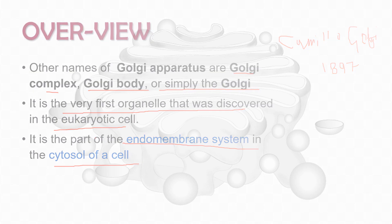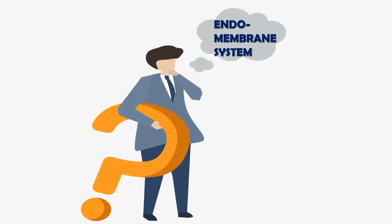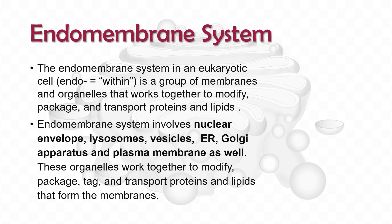You might be wondering what the endomembrane system of a cell is. Basically, it is a membrane system inside a cell where a group of membranes and organelles work together to modify, package, and transport proteins and lipids. Let me take an example of a factory — a food processing factory — to explain this concept.